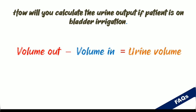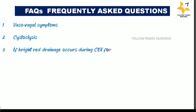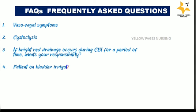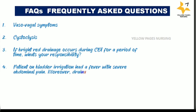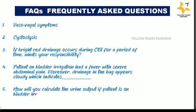Now, some frequently asked questions: What do you mean by cystoclysis? What are vasovagal symptoms? If bright red drainage occurs during continuous bladder irrigation for a period of time, what is your responsibility? If a patient on bladder irrigation develops a fever with severe abdominal pain and the drainage in the bag appears cloudy, what does this indicate? How will you calculate urine output if a patient is on bladder irrigation?